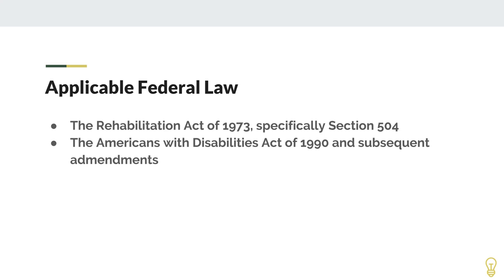The applicable federal law here includes the Rehabilitation Act of 1973, specifically Section 504. Maybe you've heard those numbers before — that's where it comes from, basically saying that as a public school we have to be able to provide for anybody regardless of disability. Specifically when we talk about websites, we're talking about vision impairment. The next one is the Americans with Disabilities Act of 1990 and the subsequent amendments added to it.